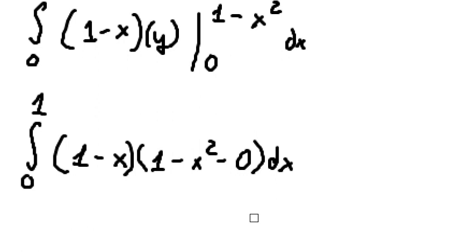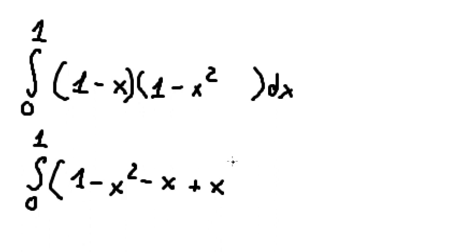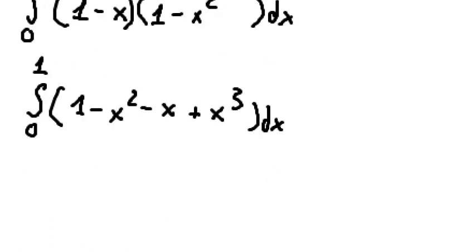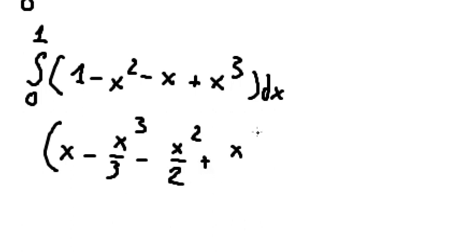So we can simplify. Number one multiplied by this gives us 1 minus x multiplied by 1 minus x squared. The interpretation after integrating: this one is about x, this one is about x³ over 3, this one is about x² over 2, and the last one is about x⁴ over 4.